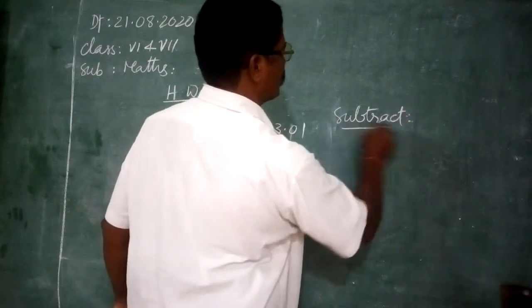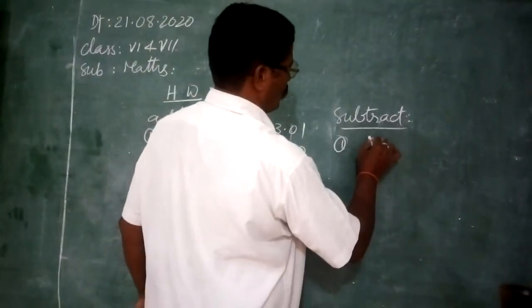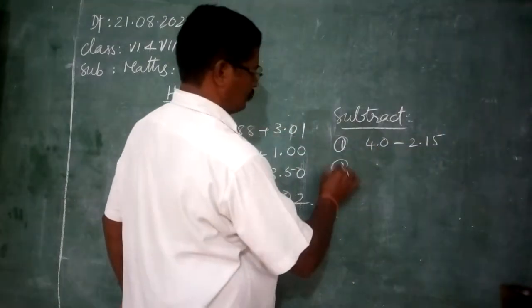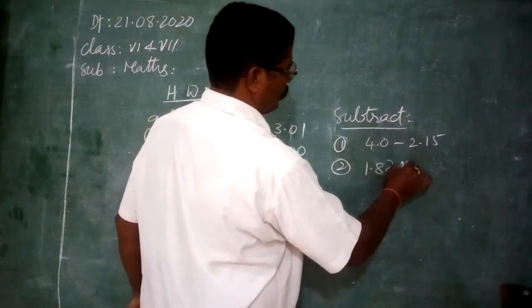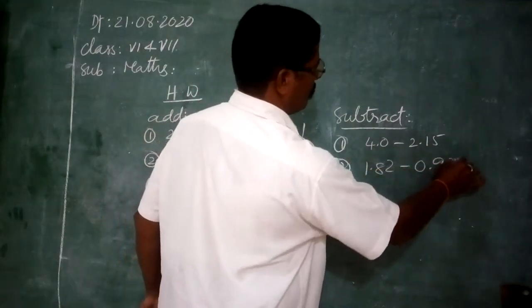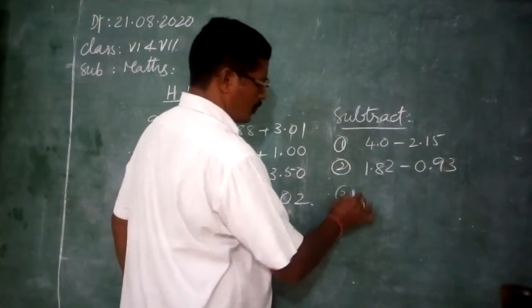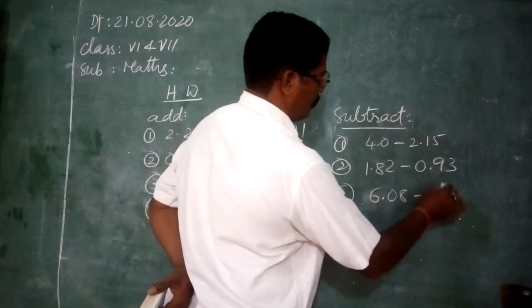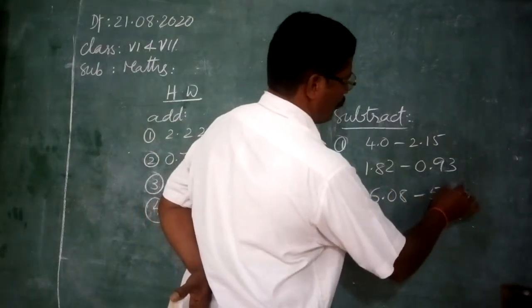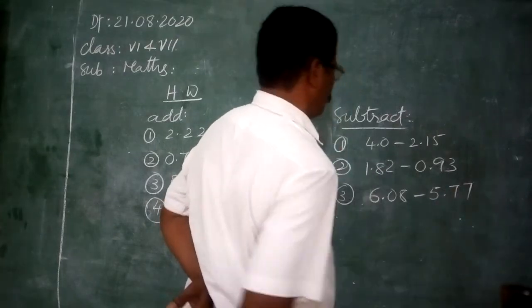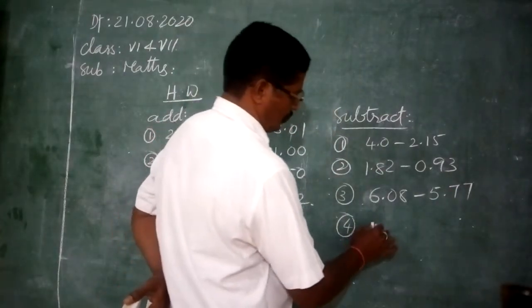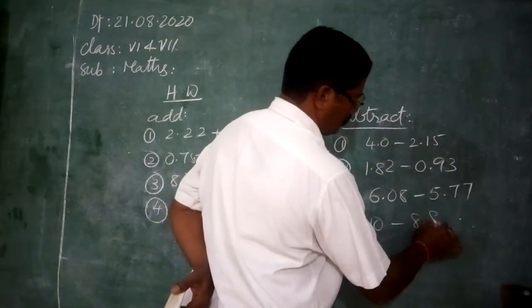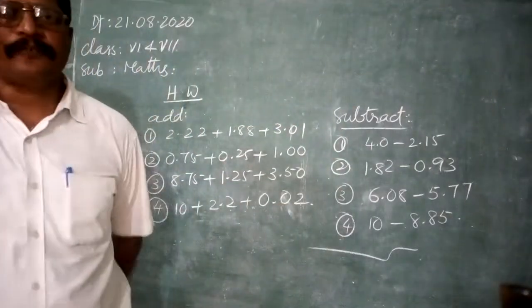These are the additions. Subtractions. Subtract. First question 4.0 minus 2.15. 1.85, 1.82 minus 0.93. Third question 6.08 minus 5.77. Fourth question 10 minus 8.85.